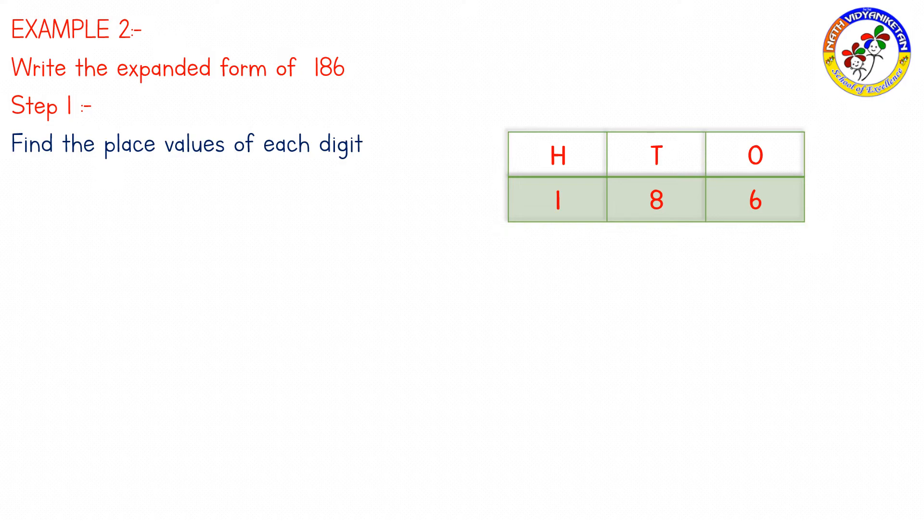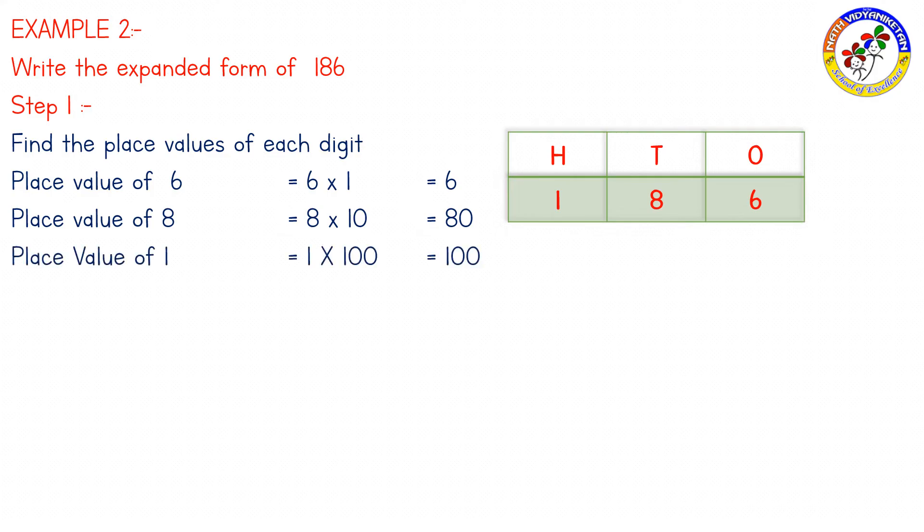Together: 1's, 10's, 100's. Place value of 6 is 6 into 1, which is 6. Place value of 8 is 8 into 10, which is 80. Place value of 1 is 1 into 100, which equals 100.